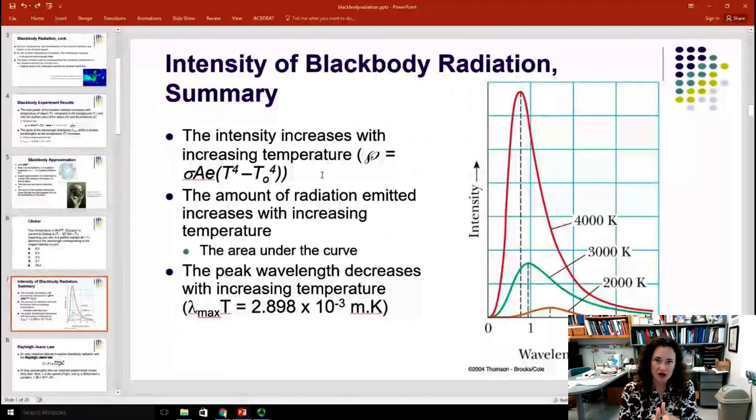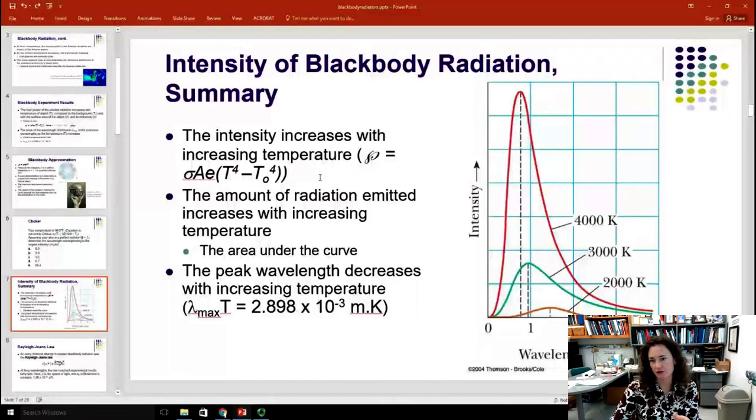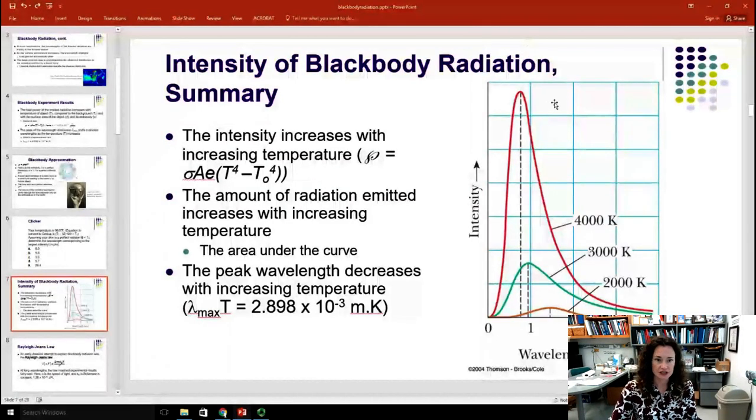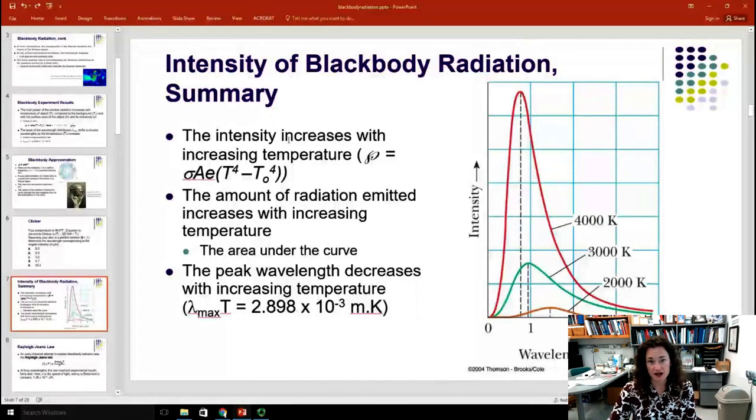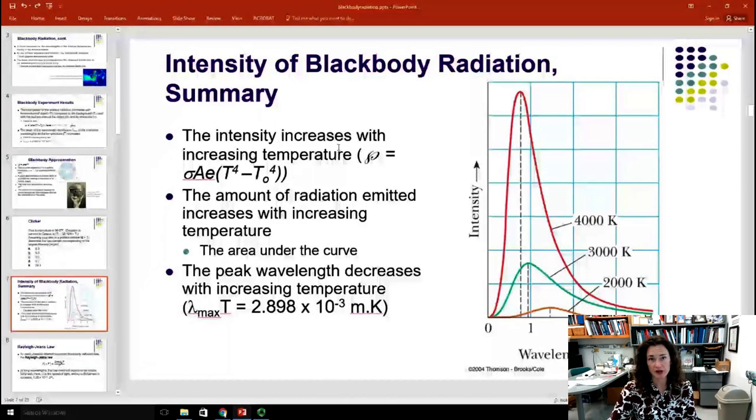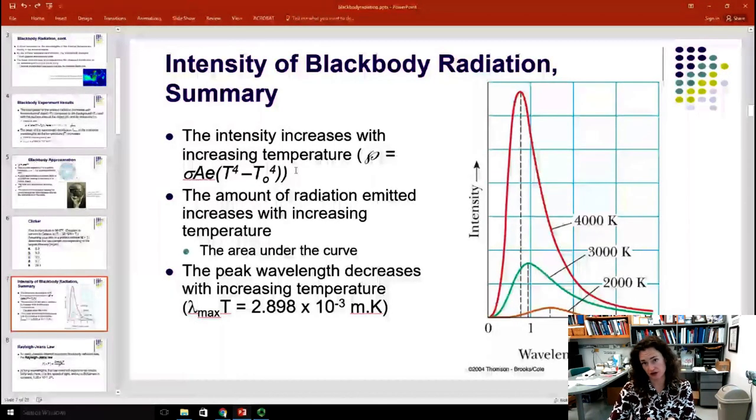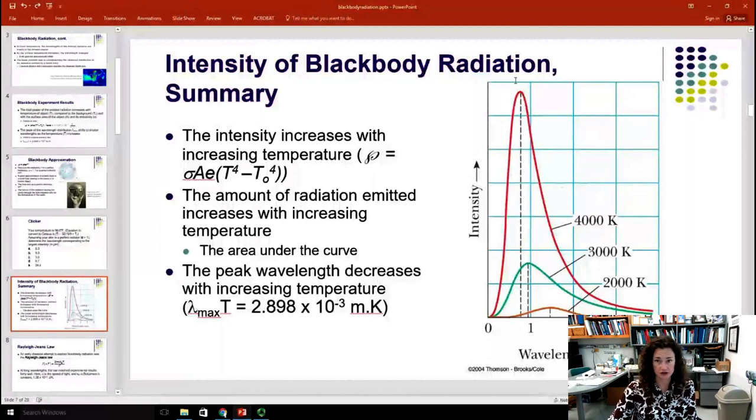Here's what the black body radiation curves look like for a range of temperatures 2,000 to 4,000 Kelvin. And what you can see is that the intensity does, in fact, increase with increasing temperature. And this could be likened to Stefan's Law. P is equal to σAE T^4 minus T_0^4. As the temperature increases, the intensity goes up.